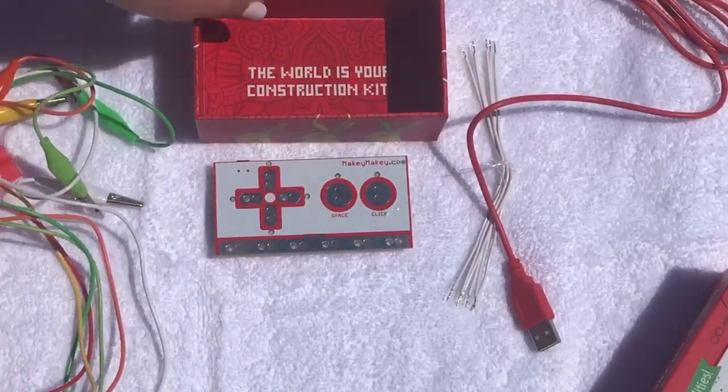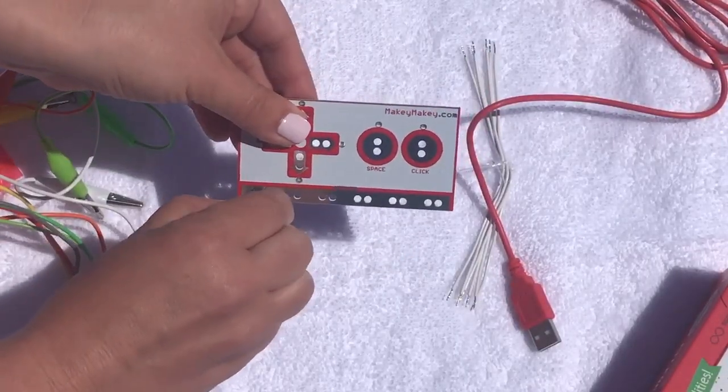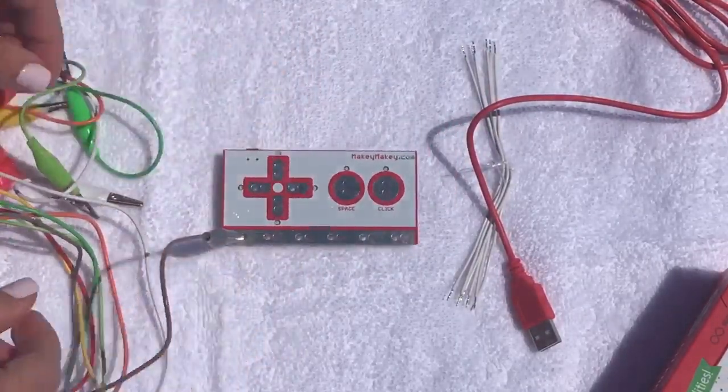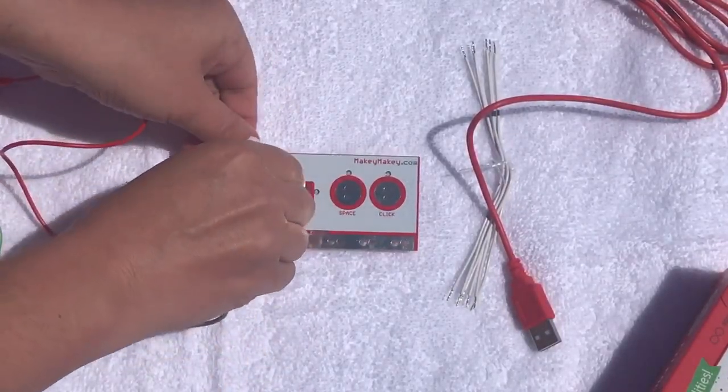So the first thing that I always do for myself and for the students is to put the cord on the ground floor of the Makey Makey. This is what the student has to hold when they're touching the other objects on the Makey Makey.